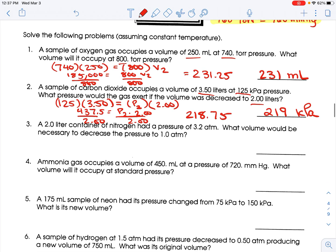A 2 liter container of nitrogen had a pressure of 3.2 atmospheres. What volume would be necessary to decrease it to 1 atmosphere? So, 3.2 times 2 equals 1 times, I don't know. So, 3.2 times 2 is 6.4 equals 1.0 times V2. Divide by 1, and you get 6.4 liters. Don't forget your units.